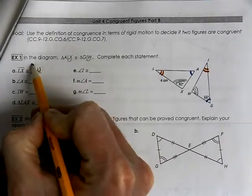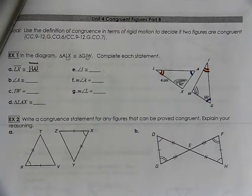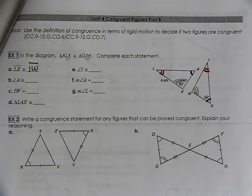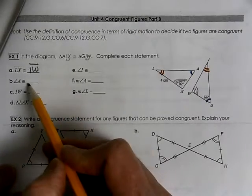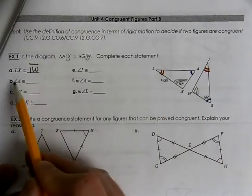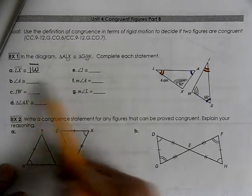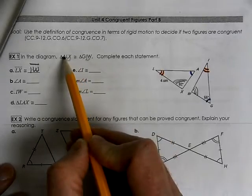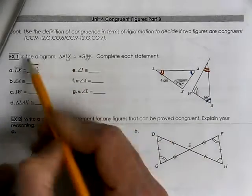I like using the congruent statement. Just grab the letters in the same position. Angle A, that's the blue angle. You know that that's going to be congruent to the blue angle. Or A is the first letter. G is the first letter.